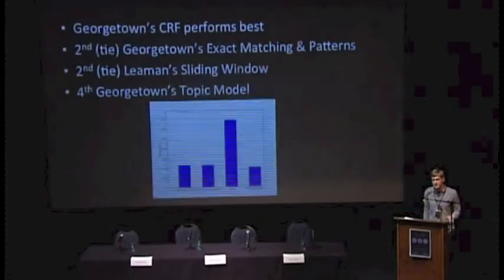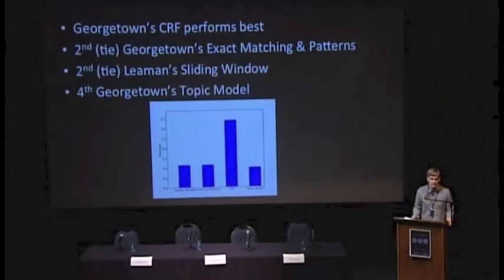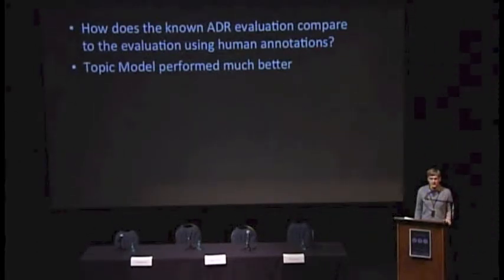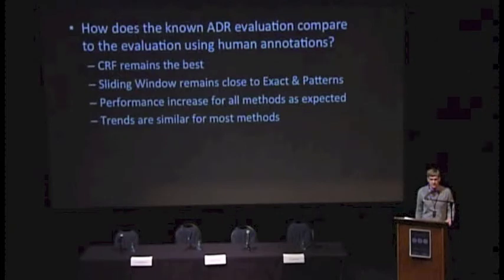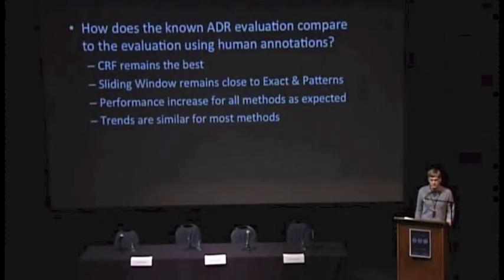We're not distinguishing between first and third person mentions as we are with annotations. But if we use this to evaluate a few years of Twitter data, we find that Georgetown CRF still performs the best. Exact matching and patterns is very similar to the sliding window as before, and the topic model performs poorly. To check how well this evaluation measures what's actually going on, we run it on the forums where we have annotations. There we find the CRF performs best as before, and the trends are very similar. There is a performance increase everywhere, which is expected because we're not dealing with things like first versus third person distinctions, but it's good that the trend seems similar for most of the methods.